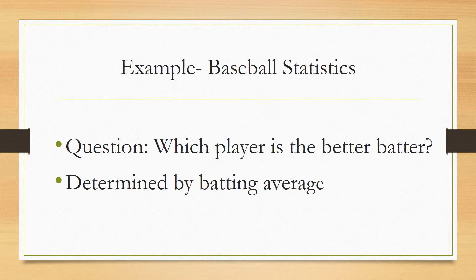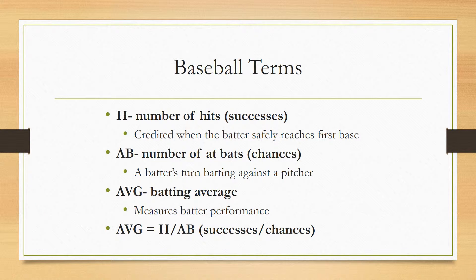Now that we know the definition of Simpson's Paradox, we can look at some examples. Our first example uses baseball statistics. The main question is: which player is the better batter? We will determine this by batting average. Let me define some terms: H is the number of hits, or successes — a hit is credited when a batter safely reaches first base. AB is the number of at-bats, or the number of chances the batter has — a batter is given an AB when he has a turn against the pitcher.